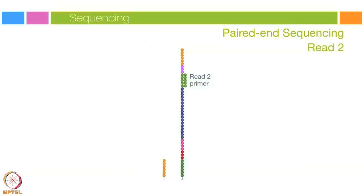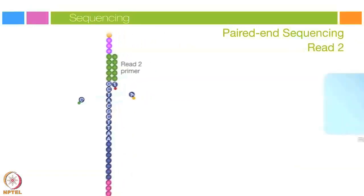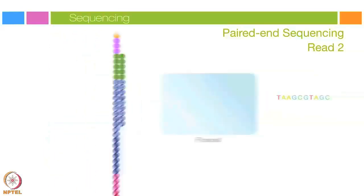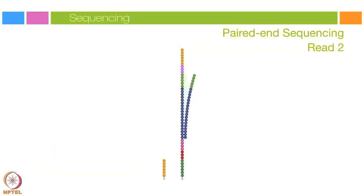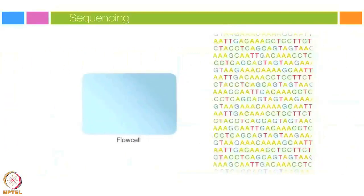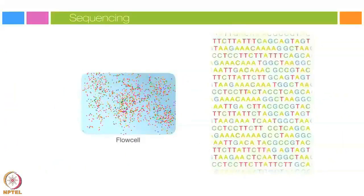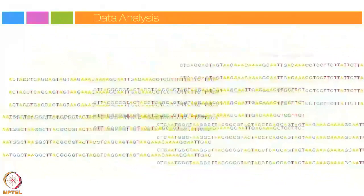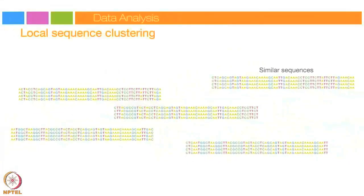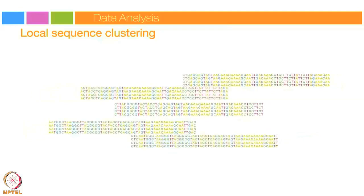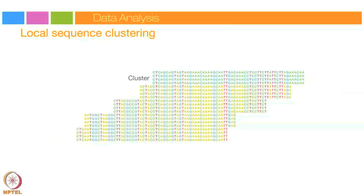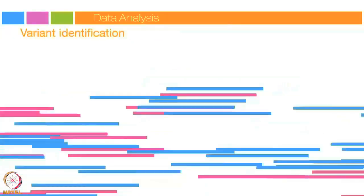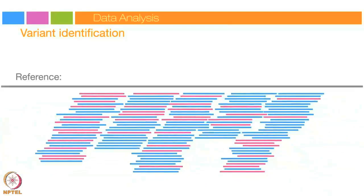Read two begins with the introduction of the read two sequencing primer. As with read one, the sequencing steps are repeated until the desired read length is achieved. The read two product is washed away. This entire process generates billions of reads representing all the fragments. Sequences from pooled sample libraries are separated based on unique indices introduced during sample preparation. Reads with similar stretches of base calls are locally clustered, forward and reverse reads are paired creating contiguous sequences, and these are aligned back to the reference genome for variant identification. The paired-end information is used to resolve ambiguous alignments.